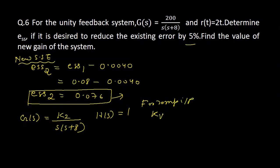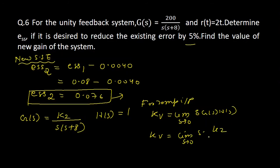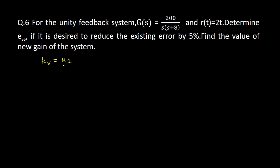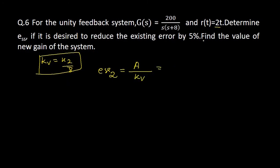For the ramp input, we find K_v: K_v equals the limit as s tends to 0 of s·G(s)·H(s). Since H(s)=1, G(s)H(s) = K2/[s(s+8)]. So K_v equals the limit as s→0 of s·K2/[s(s+8)]. The s terms cancel and putting the limit gives K_v = K2/8. Then E_SS2 = magnitude/K_v = 2/(K2/8) = 16/K2.